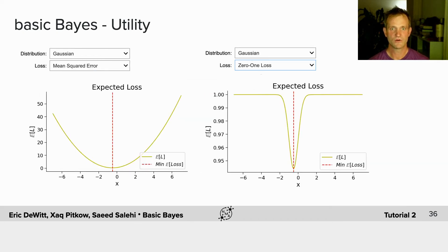However, when you look at different loss functions, you're going to see that the expected loss looks different. In this case, I'm comparing the mean squared error loss and the zero-one loss.